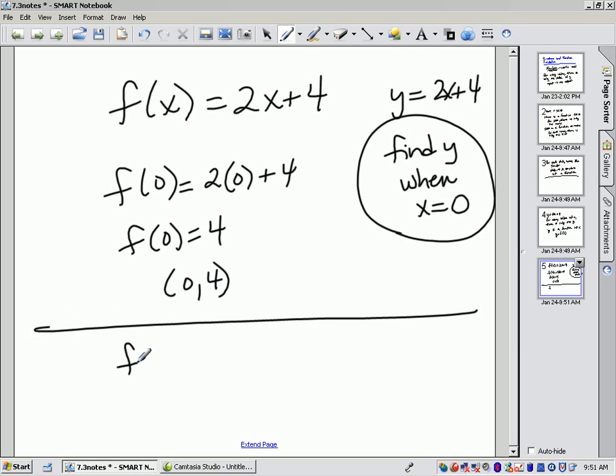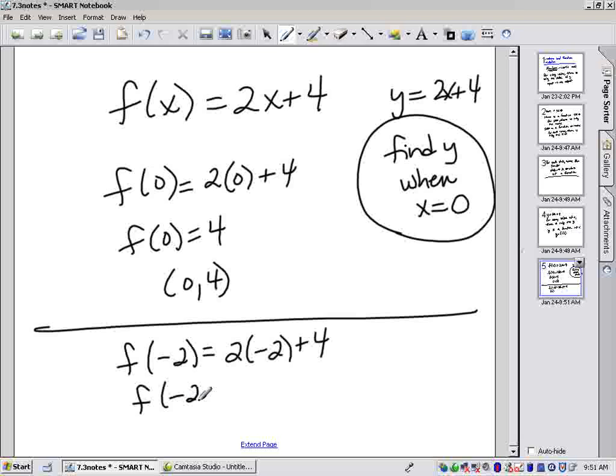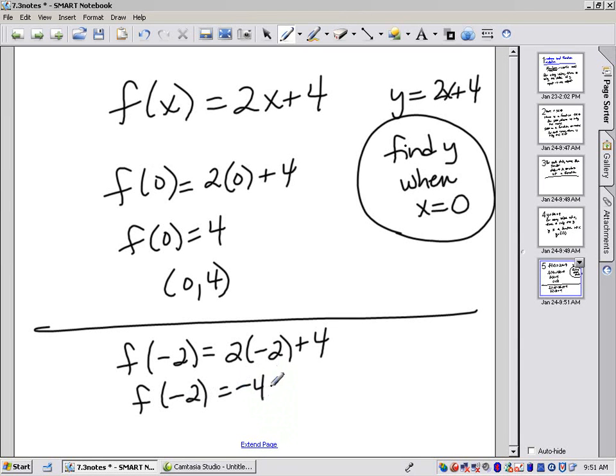If I have f of negative 2, same thing, I would say replace the x with negative 2. So f of negative 2 would be negative 4 plus 4, or 0. So this is saying if I looked on the graph at negative 2, 0 would be a point on the graph of y is equal to 2x plus 4.